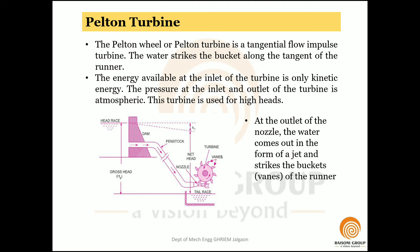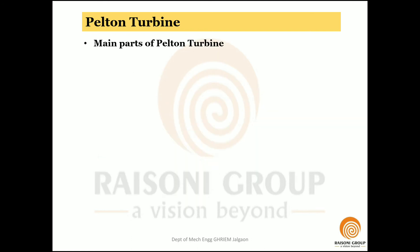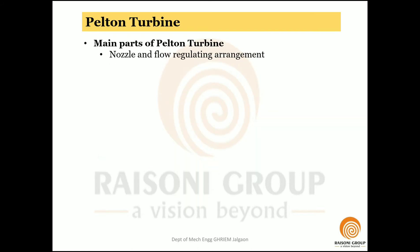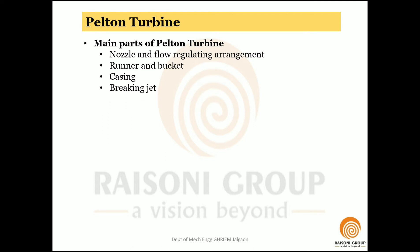The main parts of the Pelton turbine are: the nozzle and flow regulating arrangement, the runner and the bucket, the casing, and the breaking jet. We will study these four parts one by one.